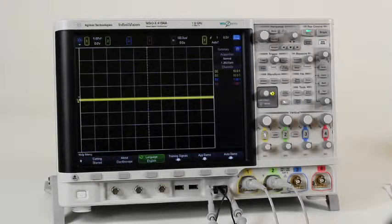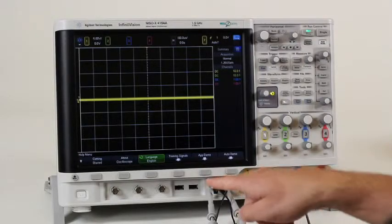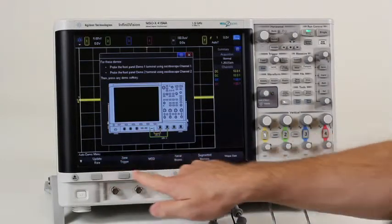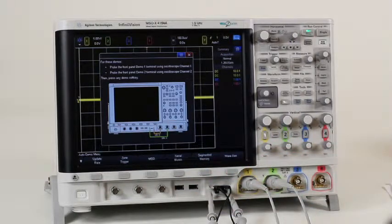Simply connect channel 1 and channel 2 probes to these probe points and press one of six auto demos or one of six app demos, and the scope has you showing the compelling value of this 4000X series oscilloscope to your customer with ease.